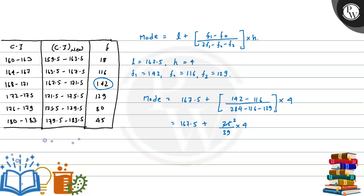This can be written as 167.5 plus 26 divided by 39 multiplied by 4. This simplifies to 8 by 3, so we can write 167.5 plus 8 divided by 3. If we solve this, we will get 170.16.